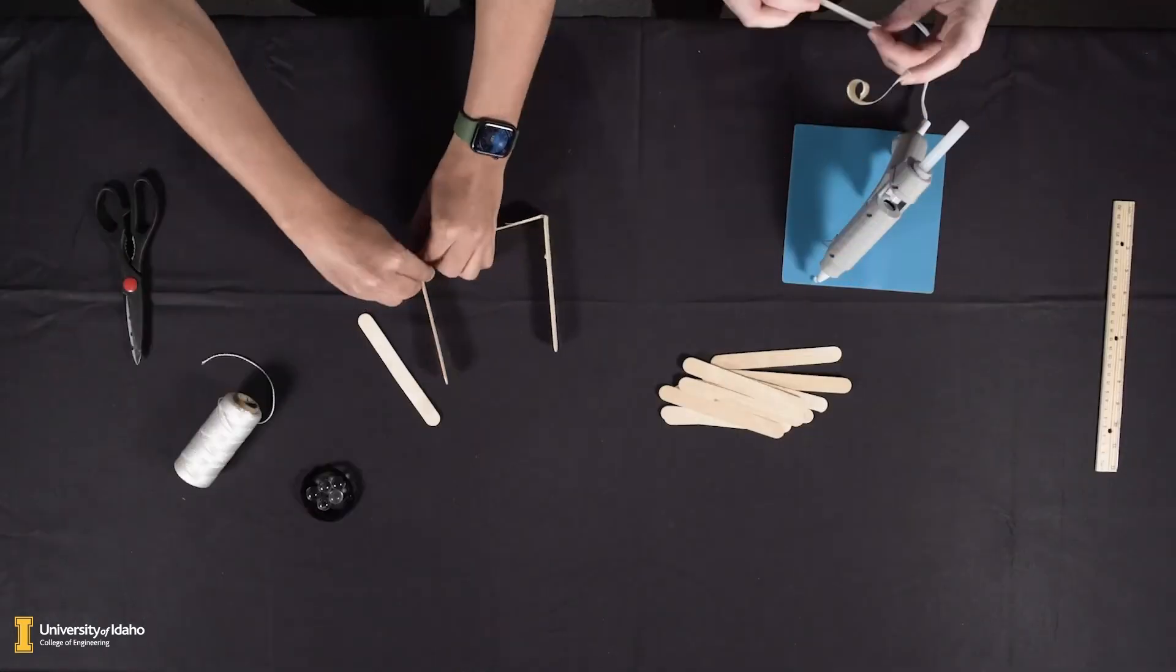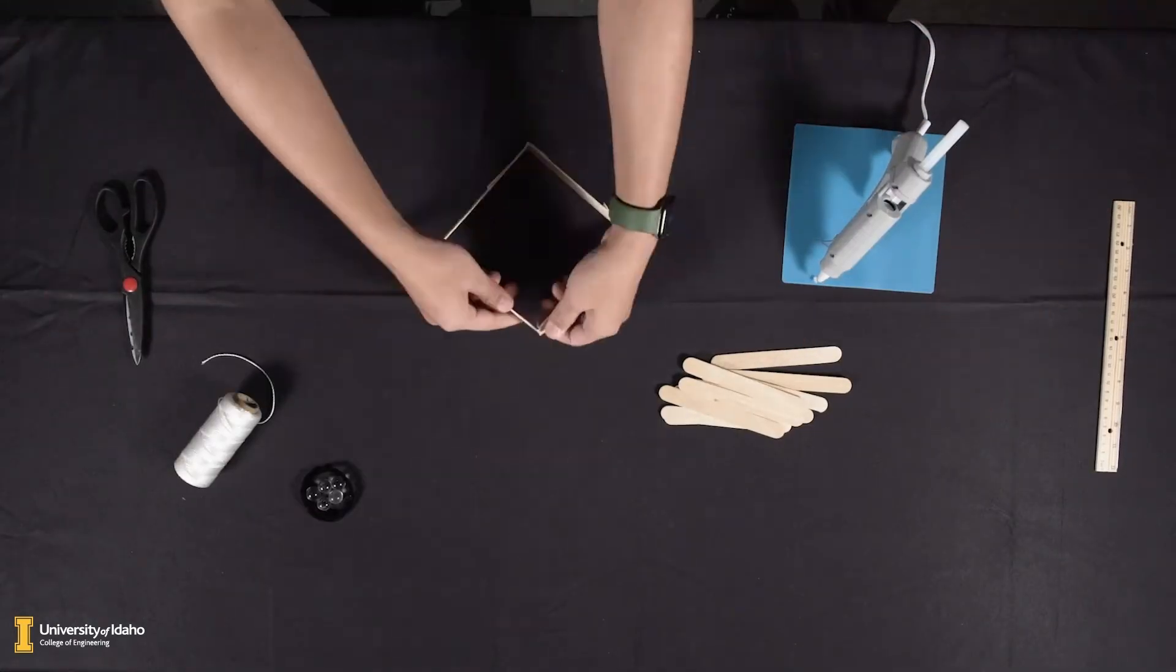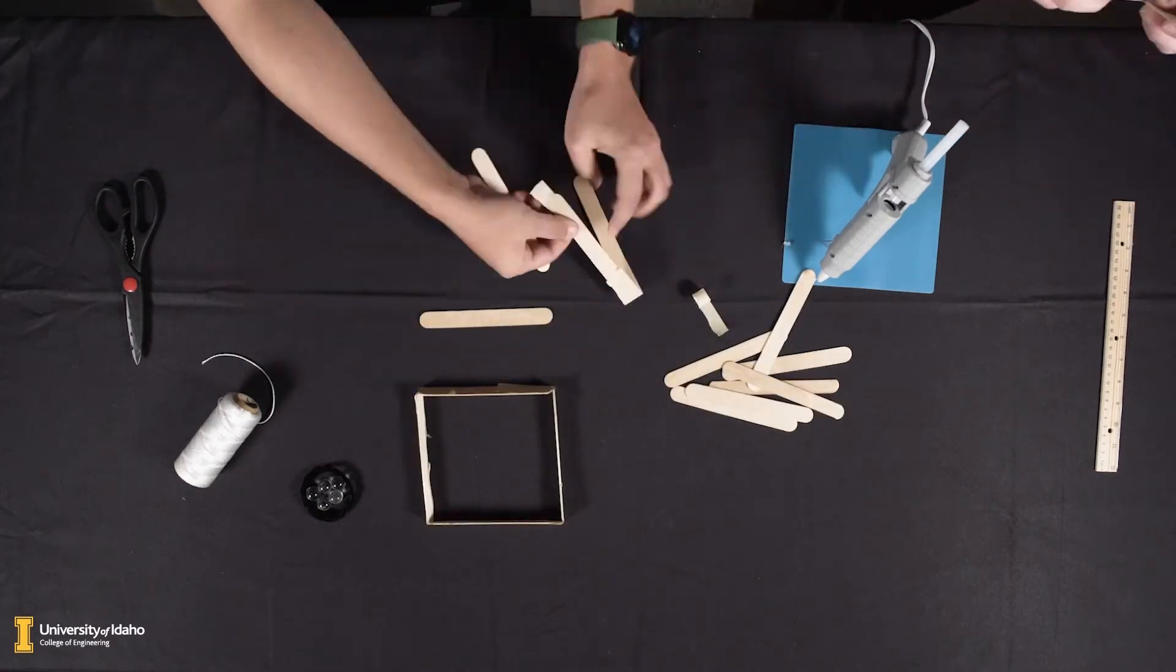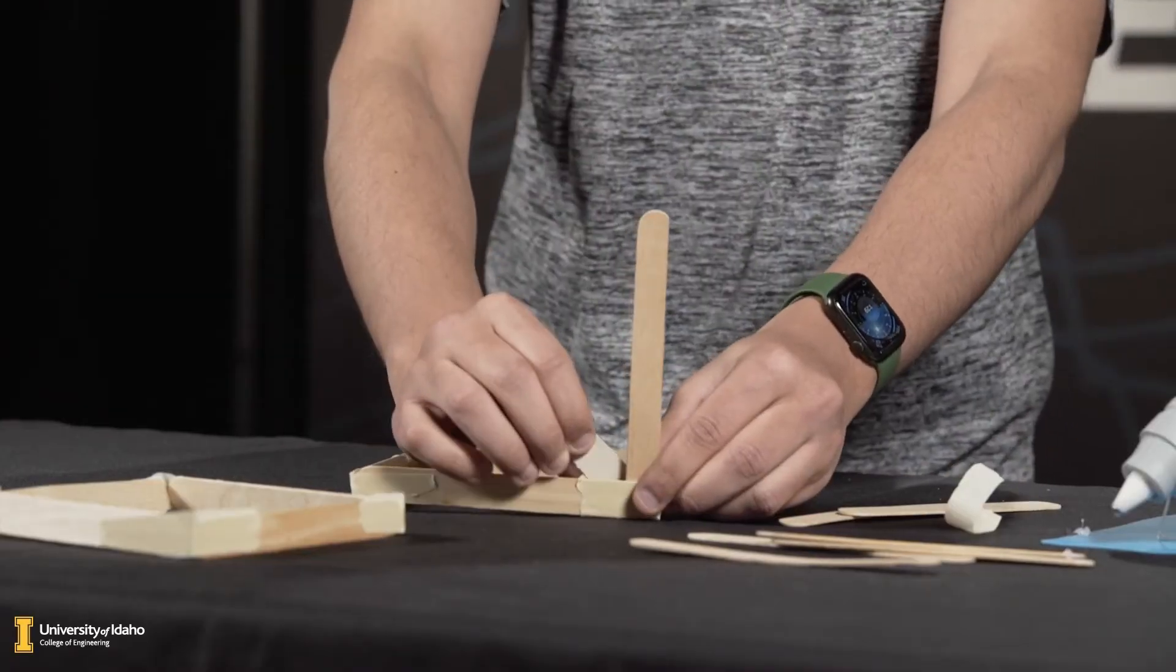First, we will be creating two squares for the top and bottom frame of your Newton's Cradle. Tape four popsicle sticks together upright and end to end to create a square. Create two of these squares.